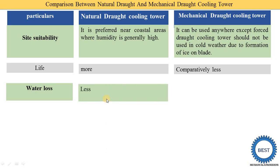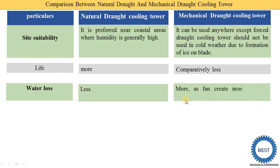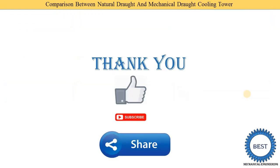Regarding water loss: in a natural draft cooling tower, water loss is less. In a mechanical draft cooling tower, there is more water loss as fans create more pressure difference across the tower. Thank you for watching this video — if you learned something, please like the video, subscribe to the channel, and share with your friends.